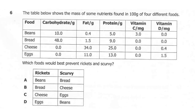Question 6. The table below shows the mass of some nutrients found in 100 grams of four different foods: beans, bread, cheese, and eggs. For carbohydrates — beans: 10, bread: 4.8, cheese and eggs: 0.80. For fats — beans: 0.4, bread: 1.5, cheese: 34.0, eggs: 11.0. For protein — beans: 5.0, bread: 9.0, cheese: 25.0, eggs: 13.0. For vitamin C — beans: 3.0mg, bread, cheese, and eggs: 0.0.